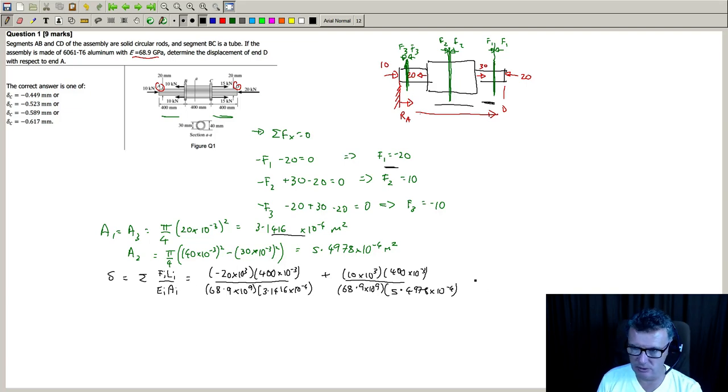And then I want to add on the last section. The last section has an internal force of minus 10, so minus 10 times 10 to the 3, 400 times 10 to the minus 3, 68.9 times 10 to the 9, and it has an area of 3.1416 times 10 to the minus 4.